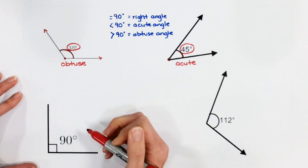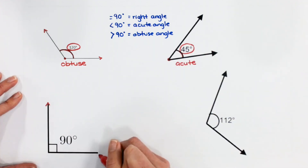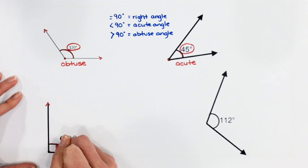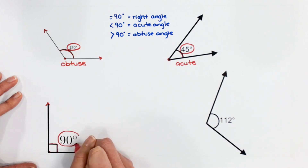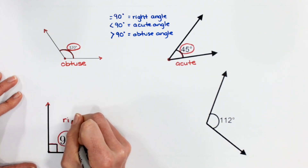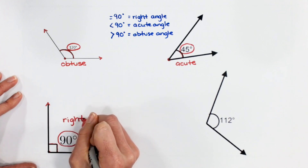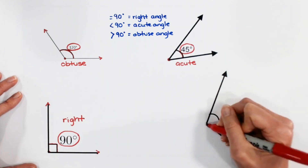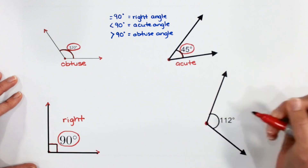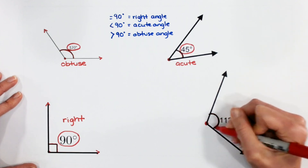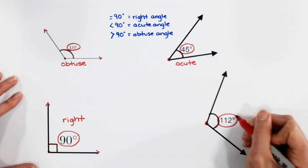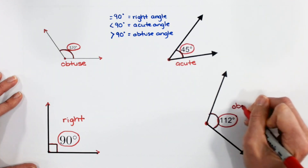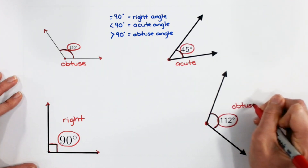Down here, I have a ray, another ray, my endpoint, and this angle measures 112 degrees, which is greater than 90. So we can classify this angle as an obtuse angle.